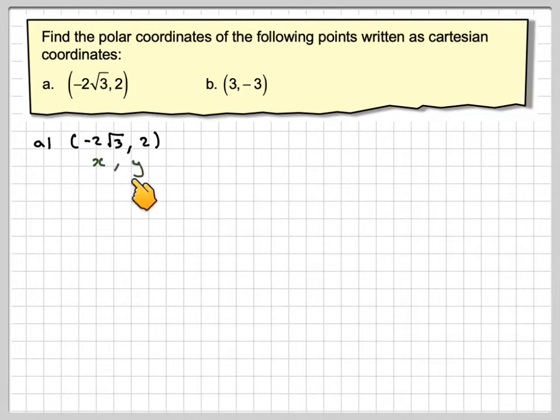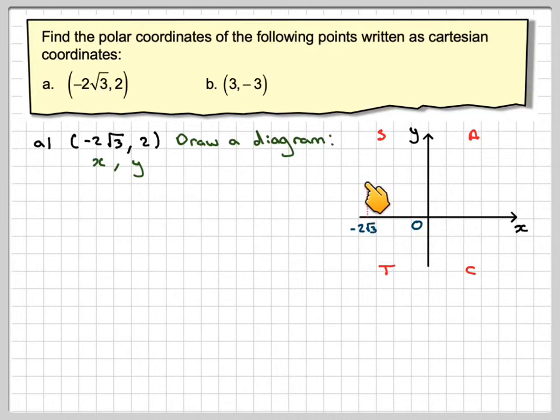So this is type (x, y). Very important to draw a diagram. We want -2√3, which is roughly around there, and we want 2 units here, so we need to draw a line from here to here. What we need to do is find the length of the line and find out what this angle is here. That will give me the polar coordinates.